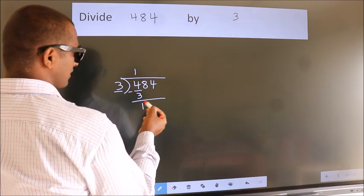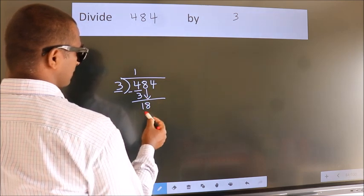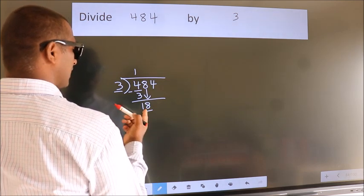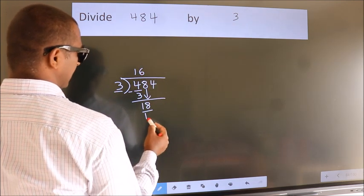After this, bring down the beside number. So, 8 down. So, 18. When do we get 18? In 3 table: 3, 6, 18.